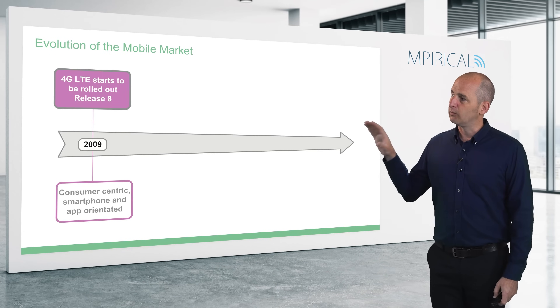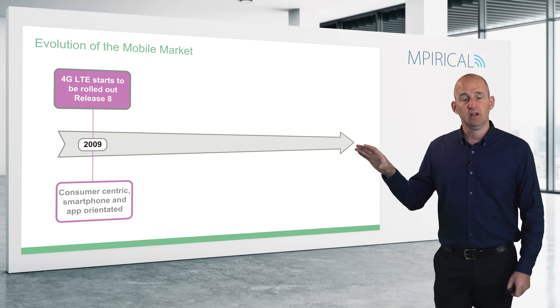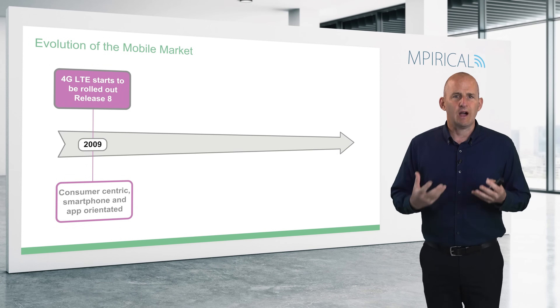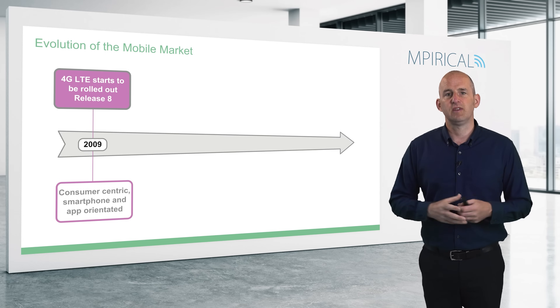To consider the driving factors behind network slicing, we really need to take a look at the journey that we've had to get to 5G. Right now we've seen non-standalone 5G deployed quite extensively and we're currently in the rollout phase of standalone 5G, bearing in mind that you need standalone 5G for network slicing. But we really need to take a look back at 4G to figure out why we are here today with this notion of network slicing.